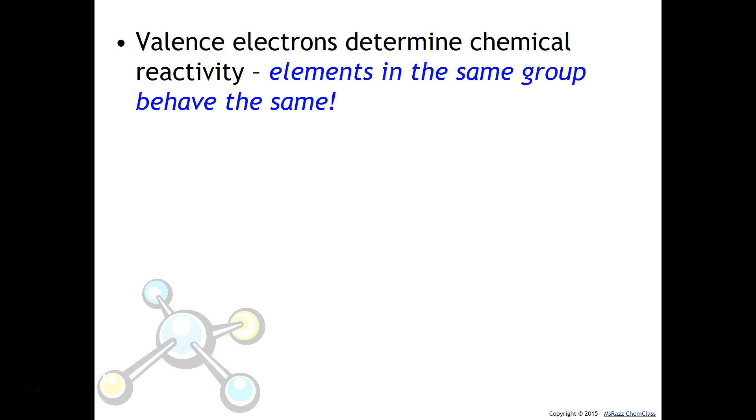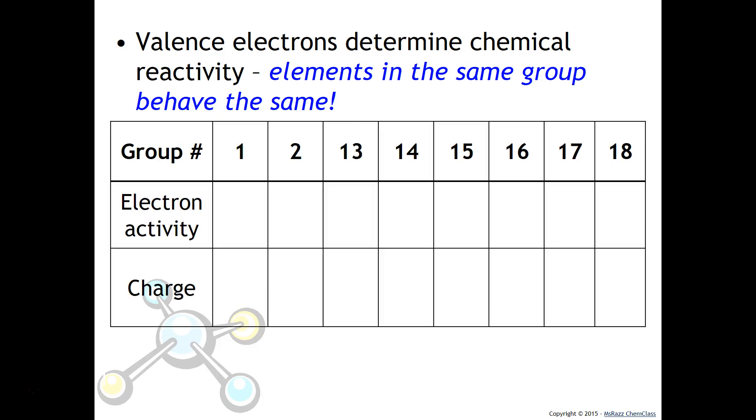As I mentioned before, valence electrons are the electrons that participate in bonding. So, elements in the same group behave the same because they have the same number of valence electrons. That makes it really easy to predict how many electrons are going to be lost or gained to become isoelectronic with a noble gas.